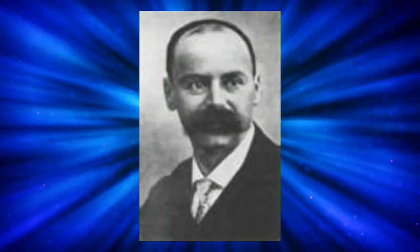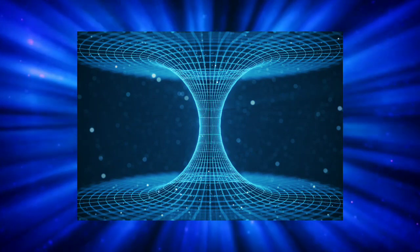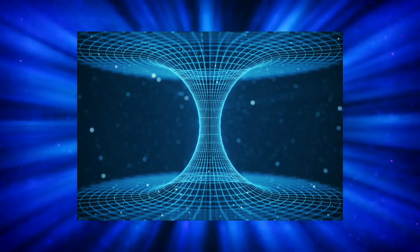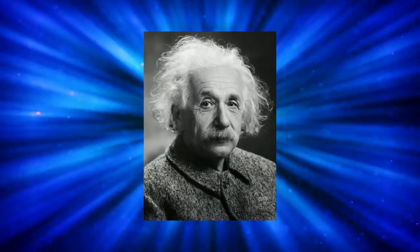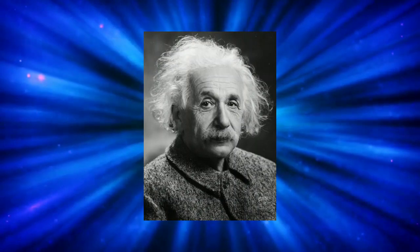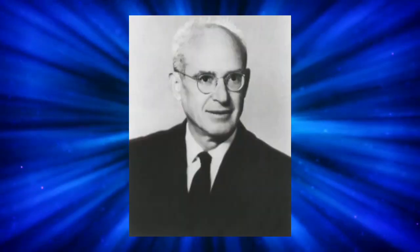In 1916, Ludwig Flamm used the Einstein-Rosen bridge solution, and a few months after Schwarzschild, he rediscovered this Einstein-Rosen bridge. Here, 'Einstein' stands for Albert Einstein and 'Rosen' is for Nathan Rosen, and they published this paper in 1935.